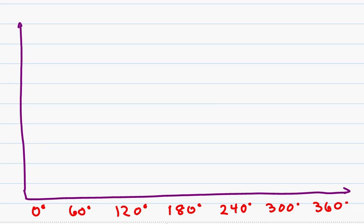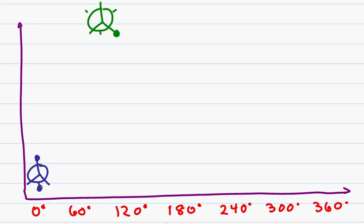Now let's see these conformations on an energy diagram. For the purpose of the diagram, I will represent the Newman Projection of butane by simply drawing a little circle where the methyl group is and lines for the hydrogens to keep it simple. Starting at zero degrees in the anti-conformation, I have my largest groups opposite each other — this is the most stable and therefore the lowest energy.